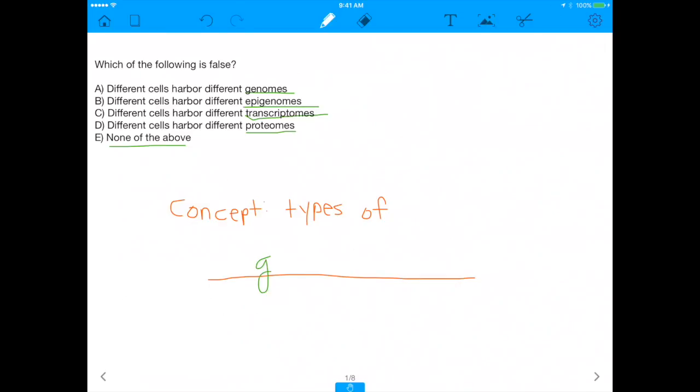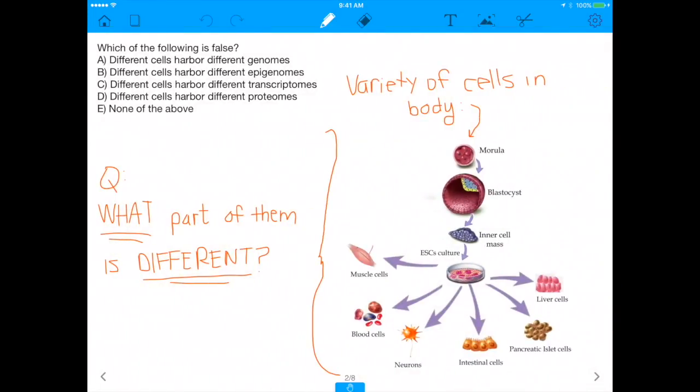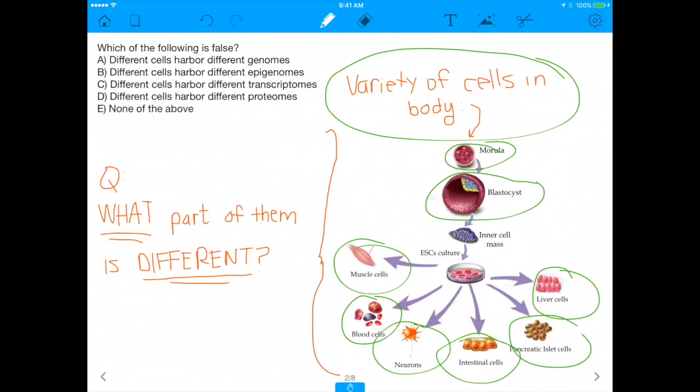So the concept we're thinking about here is types of genomes, and specifically the types of genomes within a cell, within one cell, not just across species, but within one cell. Before we do that, it's important for you to understand there are a variety of cells in your body. If you look at the right-hand side, you start as a zygote, and that zygote turns into a morula, which turns into a blastocyst, and that blastocyst eventually becomes liver cells, pancreatic cells, intestinal cells, neurons, blood cells, muscle cells. And all of these cells have a different structure and function, but they nonetheless come from the same place.